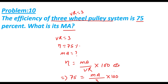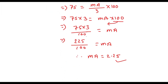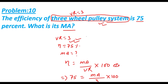In this pulley system, velocity ratio is given by the number of pulleys used. The number of pulleys used is 3 in a three-wheel pulley system, so VR becomes 3. In this way we can solve any type of problem related to the pulley system.